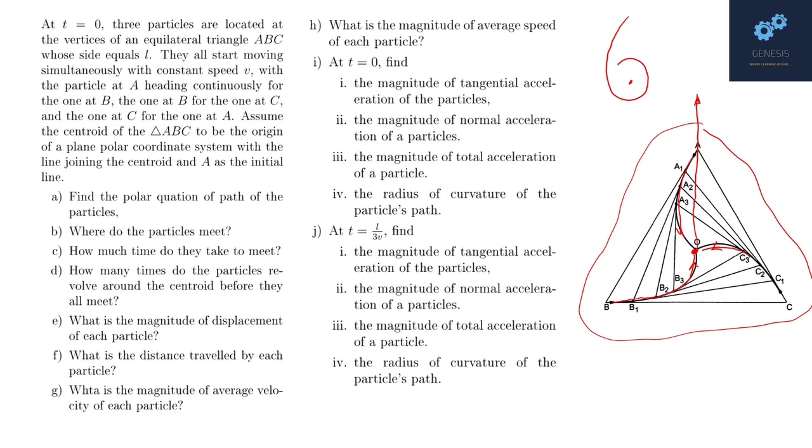Part E, what is the magnitude of displacement of each particle? Quite straightforward. F, what is the distance travelled by each particle? G, what is the magnitude of average velocity of each particle? H, what is the magnitude of average speed of each particle?